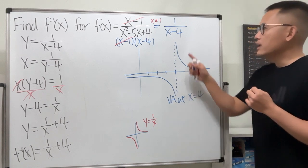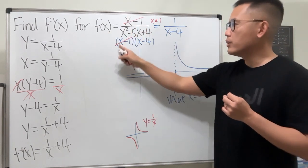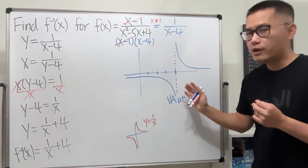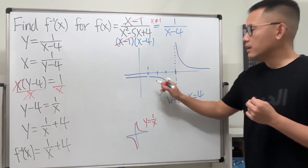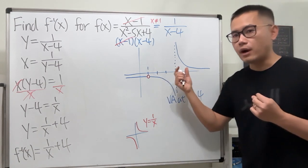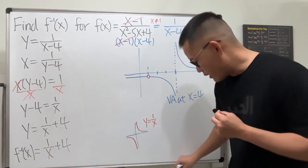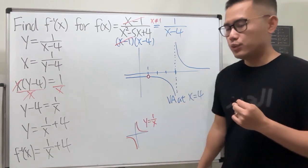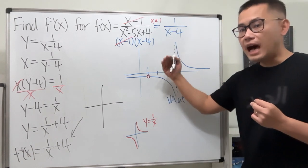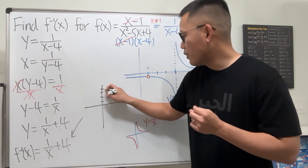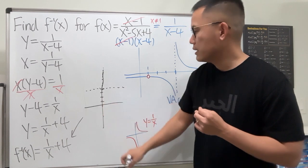If you were just graphing 1 over (x minus 4) it would look like that, but our original function had x cannot equal 1. So we go to x equals 1 on the curve and erase that point, emphasizing it with an open circle — we have a hole on the graph.